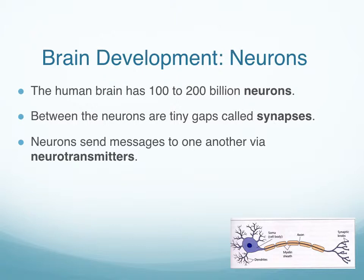There are several different types of neurons — different shapes, different sizes, different functions — but they all have the same basic elements. They have the cell body, which ends in dendrites. They have an axon, and they have synaptic knobs at the end. It's through these dendrites and synaptic knobs that the neurons communicate with one another through the synapse via neurotransmitters. For healthy brain development, several synaptic connections need to be made among the neurons in the brain.